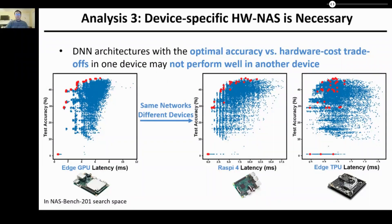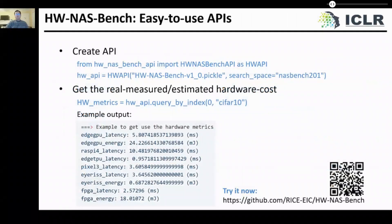The third analysis shows that device-specific HWNAS is necessary. By deploying the same networks that achieved optimal accuracy-hardware cost trade-offs on one device — marked in red in the figure — to other devices, we observed that those optimal architectures may not perform well on another device, as seen for the Jetson GPU, Raspberry Pi 4, and Jetson TPU. We have also released our proposed HWNAS Bench with easy-to-use APIs. You can create the API within just three lines of code and get hardware cost on various devices. Try it now with the provided link and QR code.